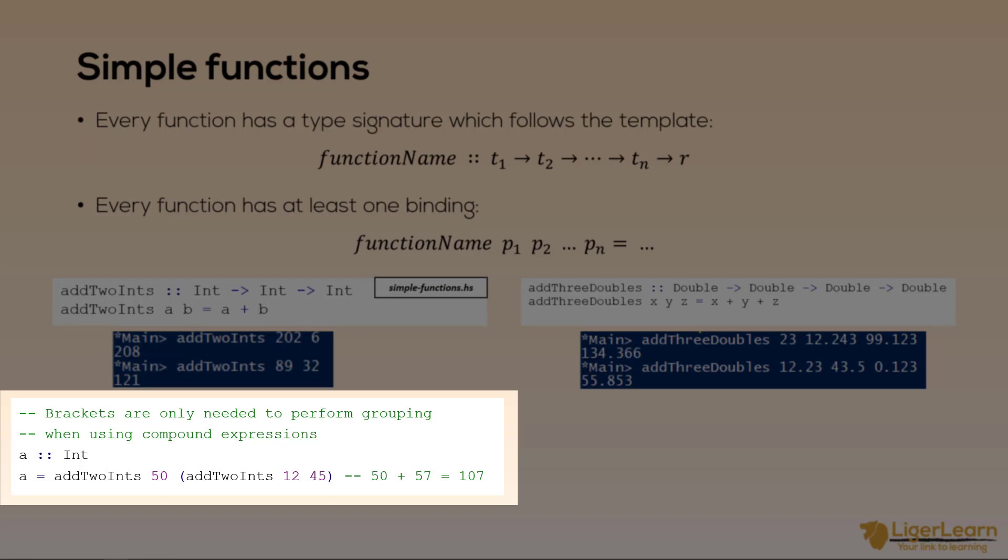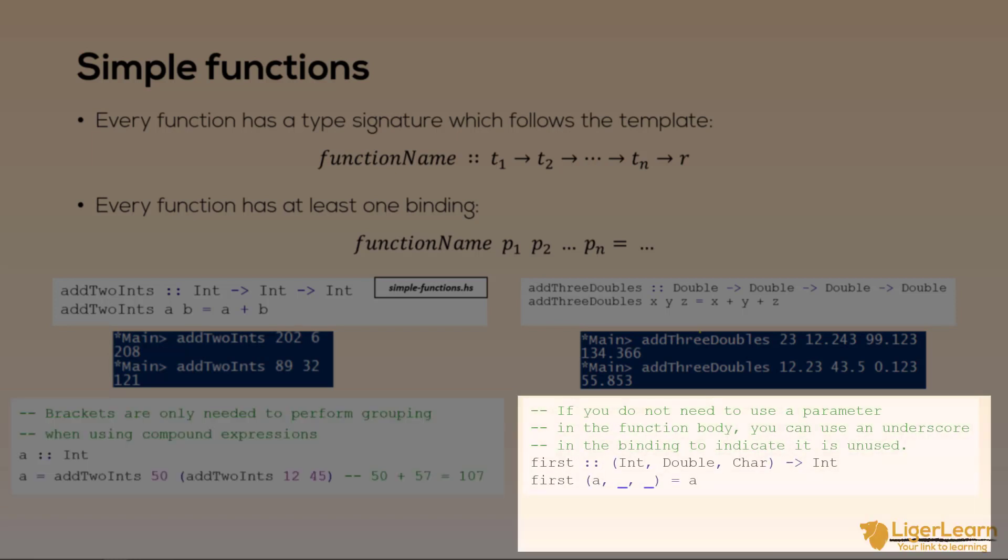Another note on unused parameters and functions. In the case where a function takes a parameter but the parameter is not used in the function body we can replace the name with an underscore. So in this case we have a function which when given a three tuple will always return the first element in the tuple. There is no need to provide parameter names for the other elements in the tuple and so we just use an underscore instead. In certain cases this can increase clarity and understanding because by immediately looking at the function you understand that the parameters are intentionally unused. You call the function like normal as you can see here.